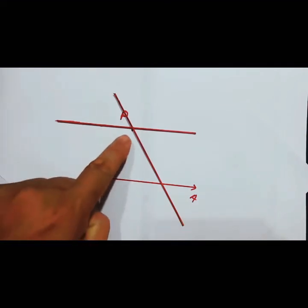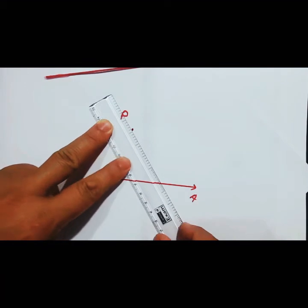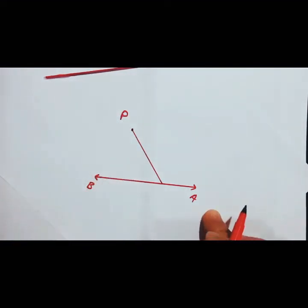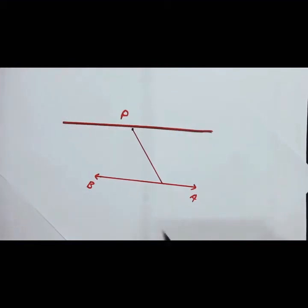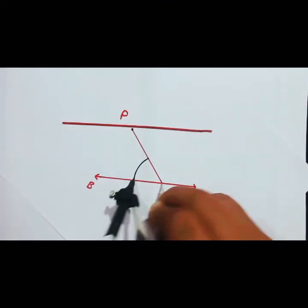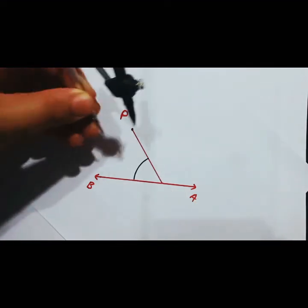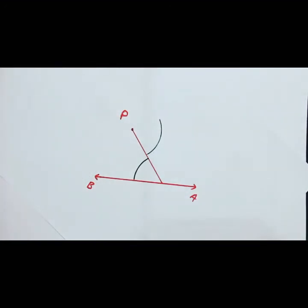Let me join P to this point over here. So, I have joined P to a point on the line. Now, after I have joined, I am supposed to make the alternate angles equal — this angle should be equal to this particular angle. Let me mark this arc — let me take a proper arc. I have taken the arc, and I have to take the same arc from point P onto this side. So, I have taken the same arc.